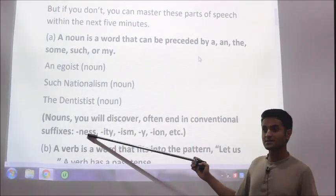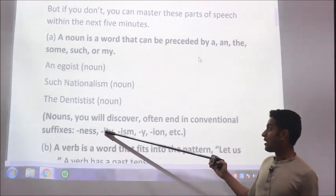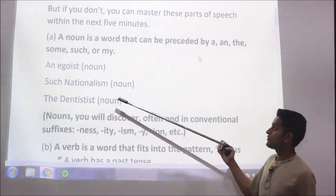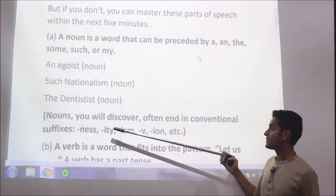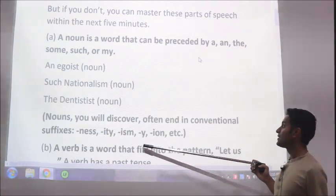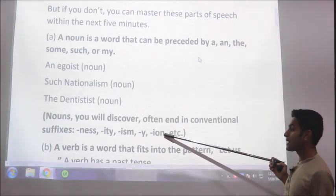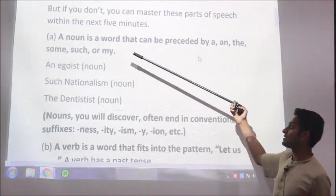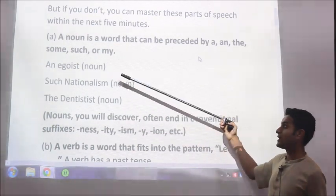For example, N-E-S-S is smartness. Then I-T-Y, piety. Then I-S-M, we have already taken nationalism. Then Y is charity. Then I-O-N, devotion, etc. So this is a quick way to identify a noun.